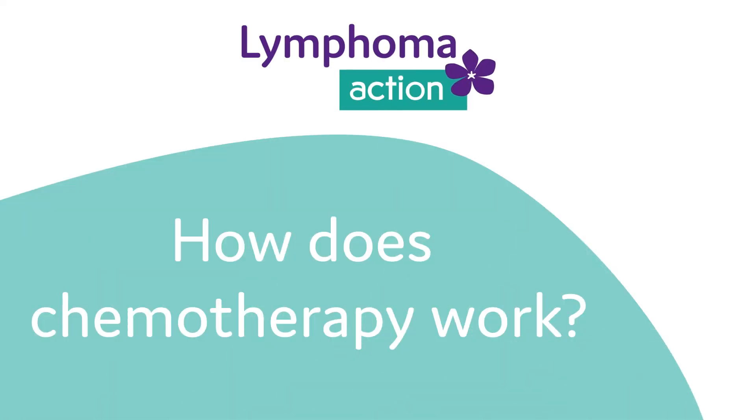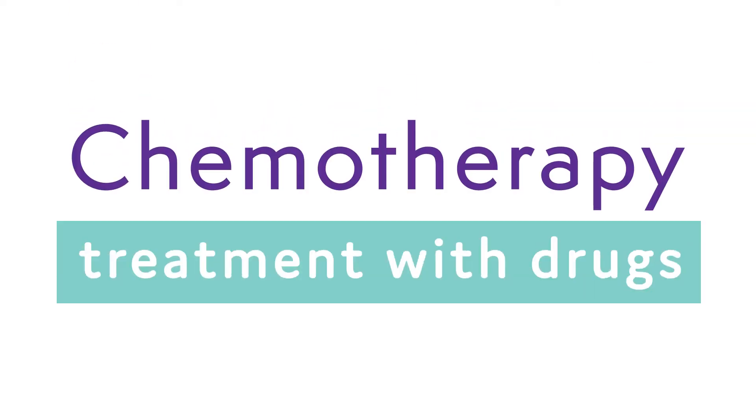How does chemotherapy work? Chemotherapy means treatment with drugs. For lymphoma treatment, these drugs are usually what are known as cytotoxic. Cytos means cell and toxic means poison. They work by poisoning the cancerous lymphoma cells.